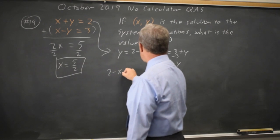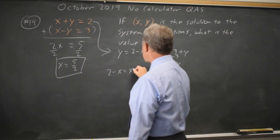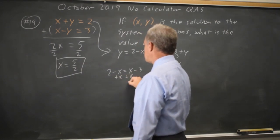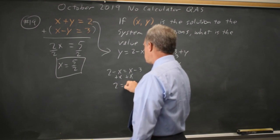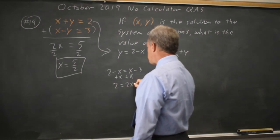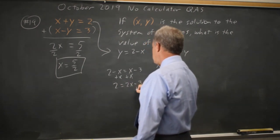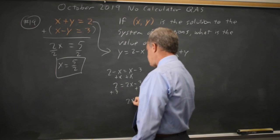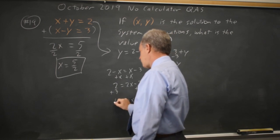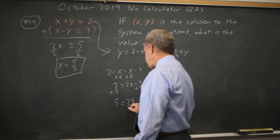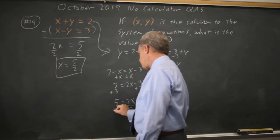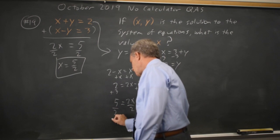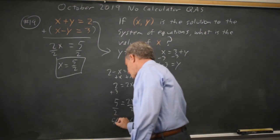2 minus x equals x minus 3. Add x to both sides: 2 equals 2x minus 3. Add 3 to both sides: 2x equals 5. And again, when we divide by 2, you get x equals 5 halves.